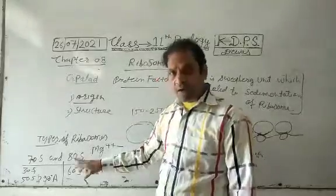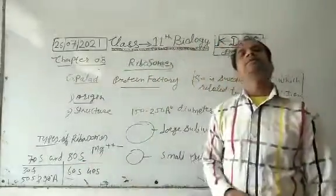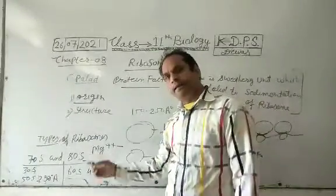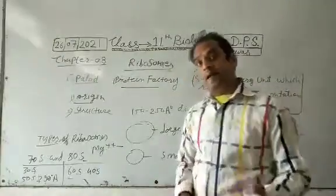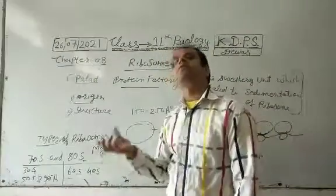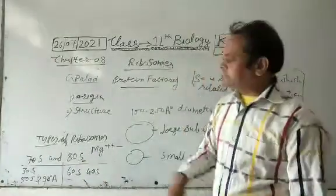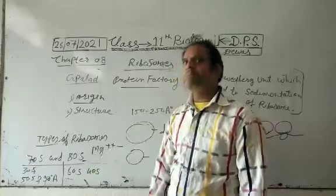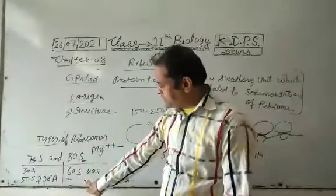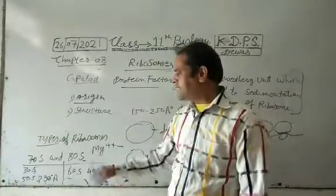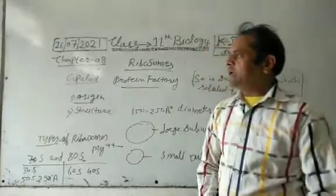The second type of ribosome is the 80S ribosome. The 80S ribosome is found in all eukaryotic cells — higher category organism cells — and also in mitochondria and chloroplasts. The 80S ribosome is made up of two subunits: its small subunit is 40S and its large subunit is 60S.